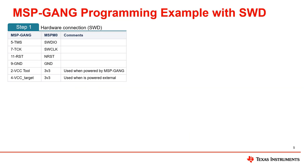Let's take MSP-Gang as an example to show you the process of flashing a program. The first step is to establish a hardware connection where the SWD interface is used, which requires five wires: two SWD signal wires, one reset wire, a power and ground.